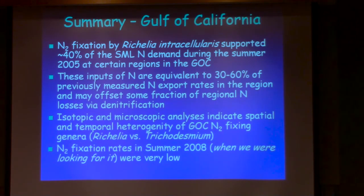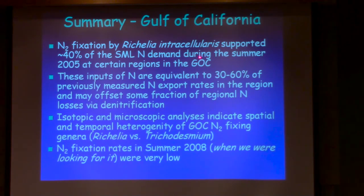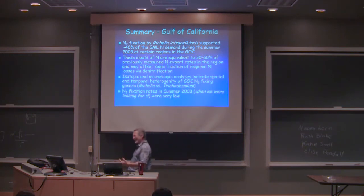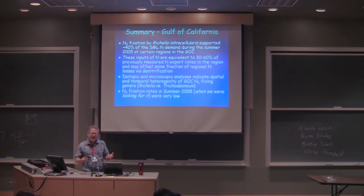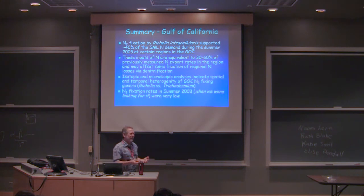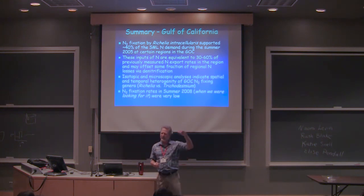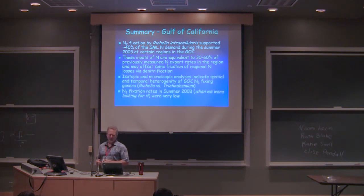Nitrogen fixation in the Gulf is mostly by Richelia intracellularis, the symbiont within the diatom, accounting for about 40 percent of the surface mixed-layer nitrogen demand. The inputs are equivalent to about 30 to 60 percent of previously measured nitrogen fluxes from surface water. It's very difficult to pick these out in a nitrogen isotope time series because the isotopic composition of these particles is on the order of 6 per mil — something you wouldn't a priori associate with nitrogen fixation. You really need to look at those values in profile to pick that out.